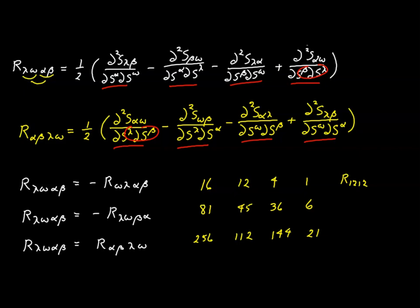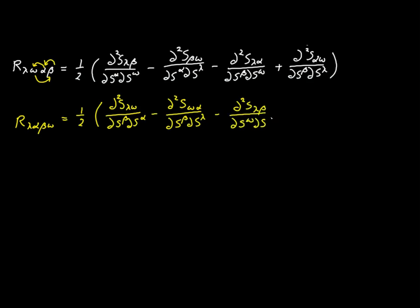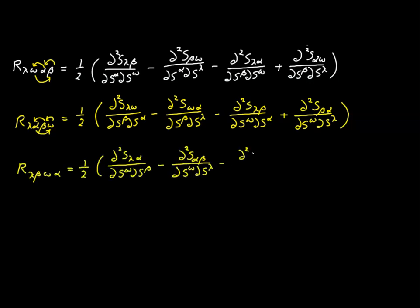Now let's explore a couple of identities related to the Riemann tensor. We'll permute the last three indices: rename omega to alpha, alpha to beta, and beta to omega. Then we do the same again: rename alpha to beta, beta to omega, and omega to alpha. Next we'll add these three equations together.